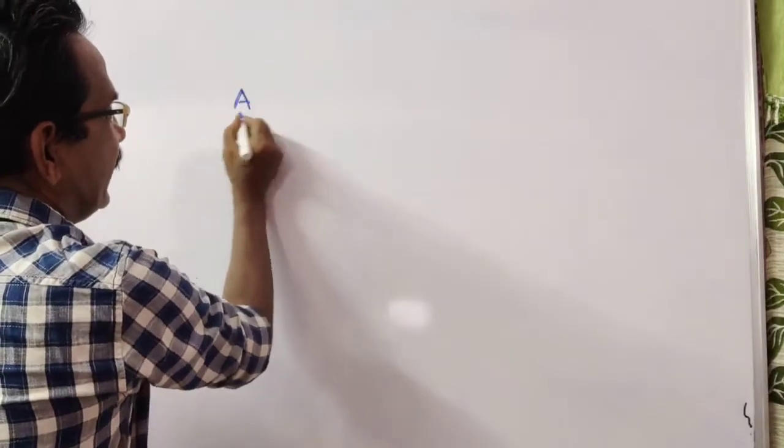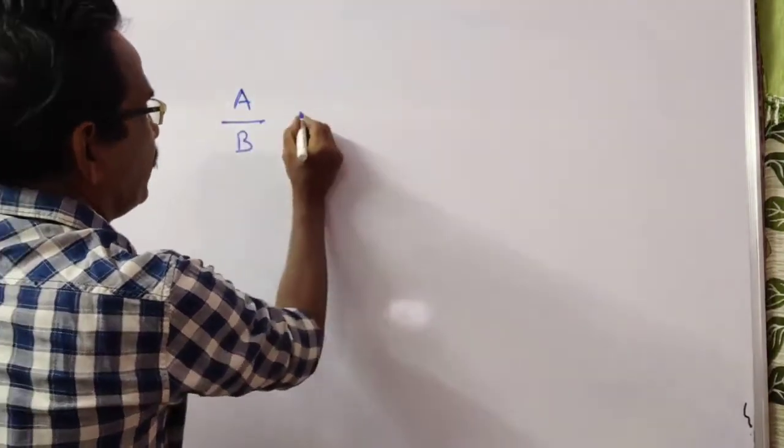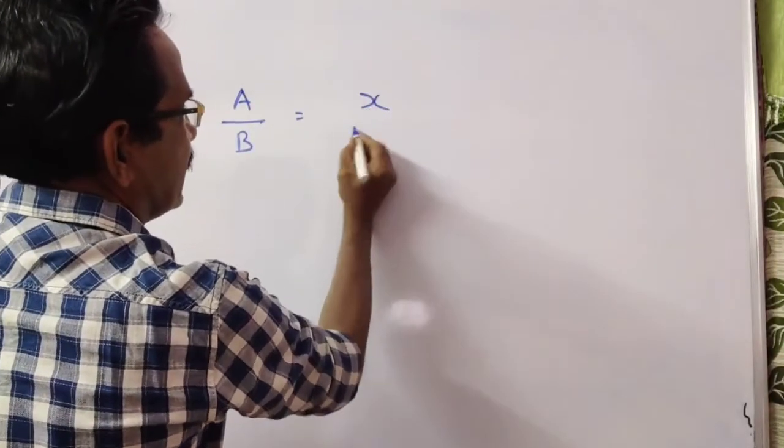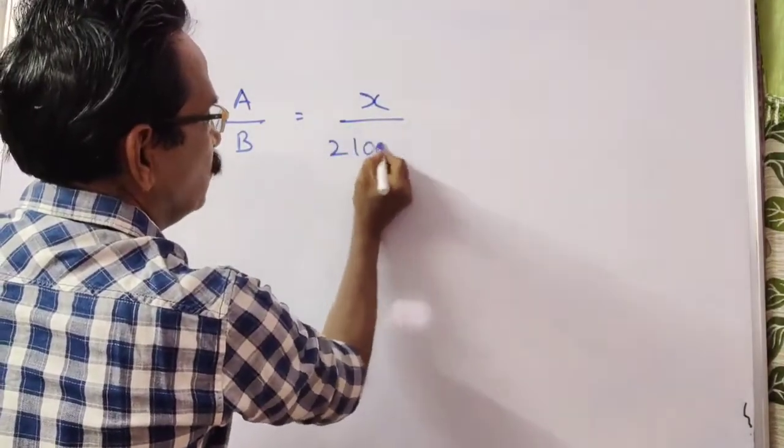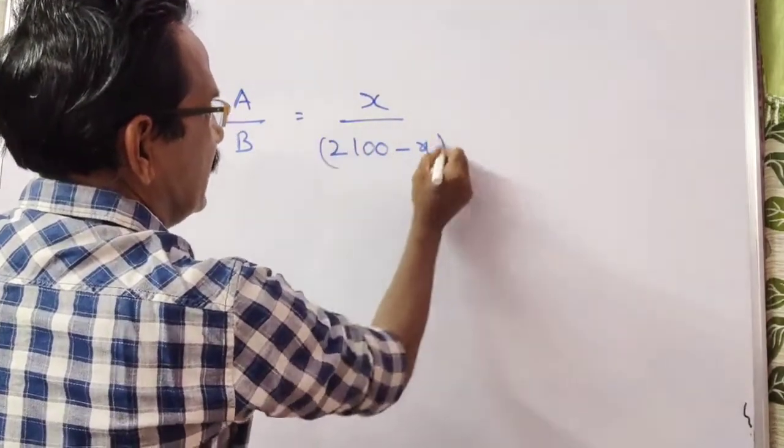What is the salary of A? See, say the salary of A is X. Then the salary of B is 2100 minus X.